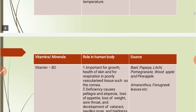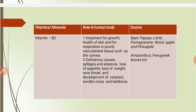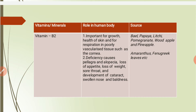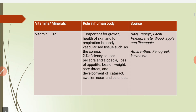Vitamin B2, also called riboflavin, is important for growth, health of the skin, and for respiration in poorly vascularized tissue such as the cornea. Deficiency causes pellagra, alopecia, loss of appetite, loss of weight, sore throat, development of cataract, swollen nose, and baldness. Sources include papaya, lychee, pomegranate, wood apple, pineapple, and in vegetables, amaranthus and fenugreek leaves.